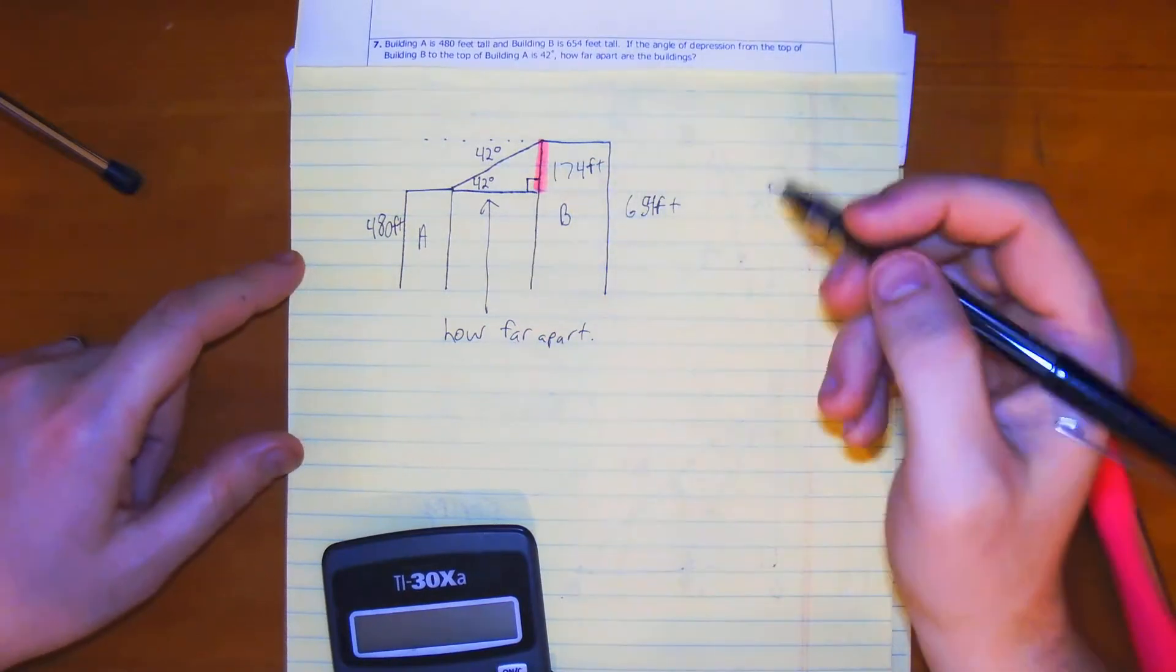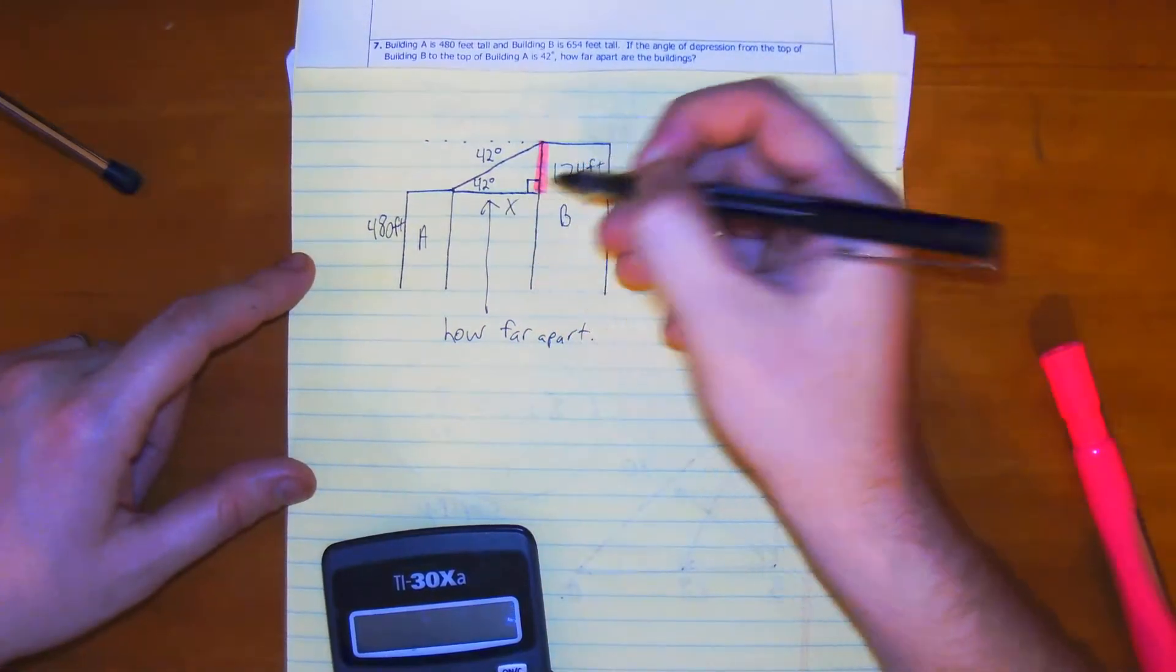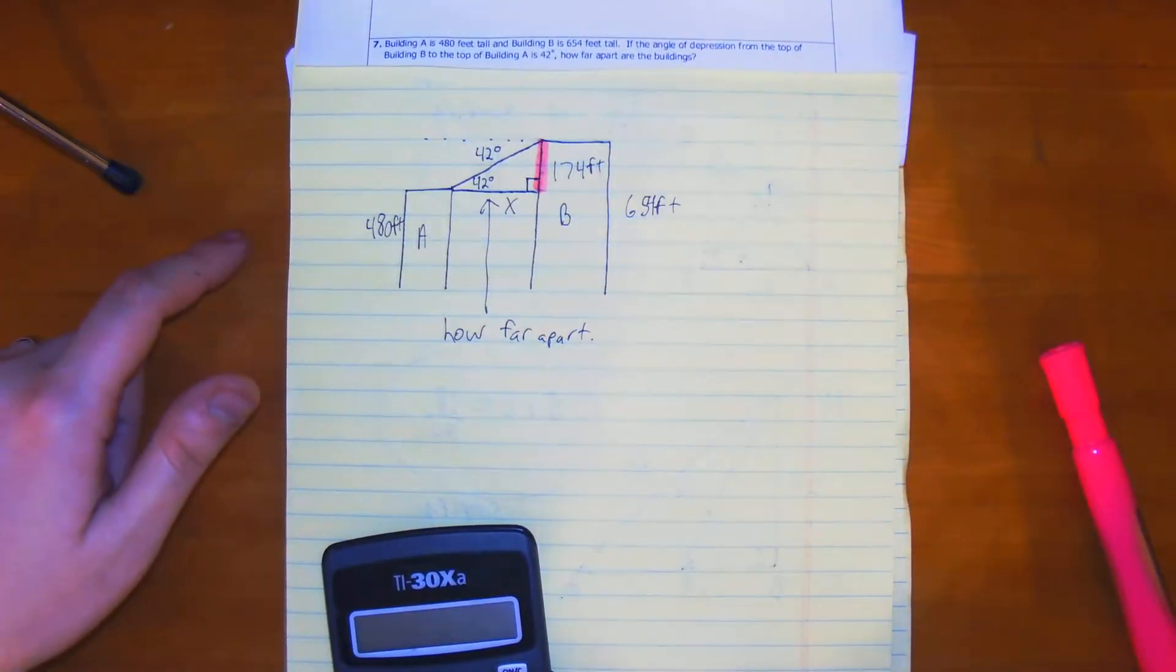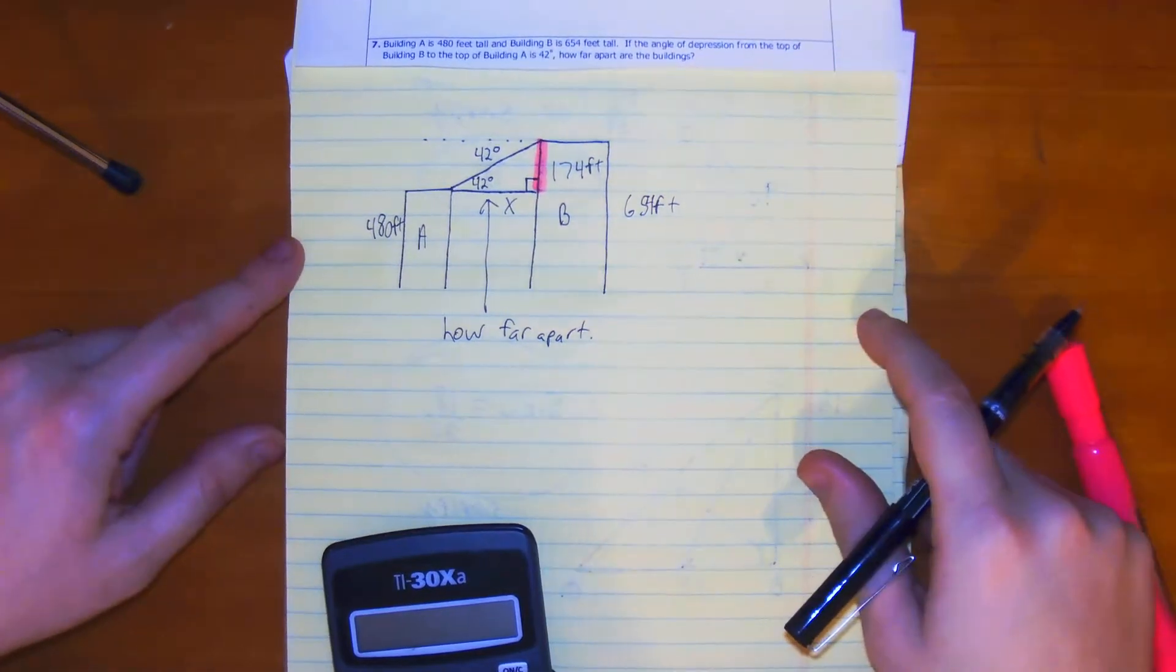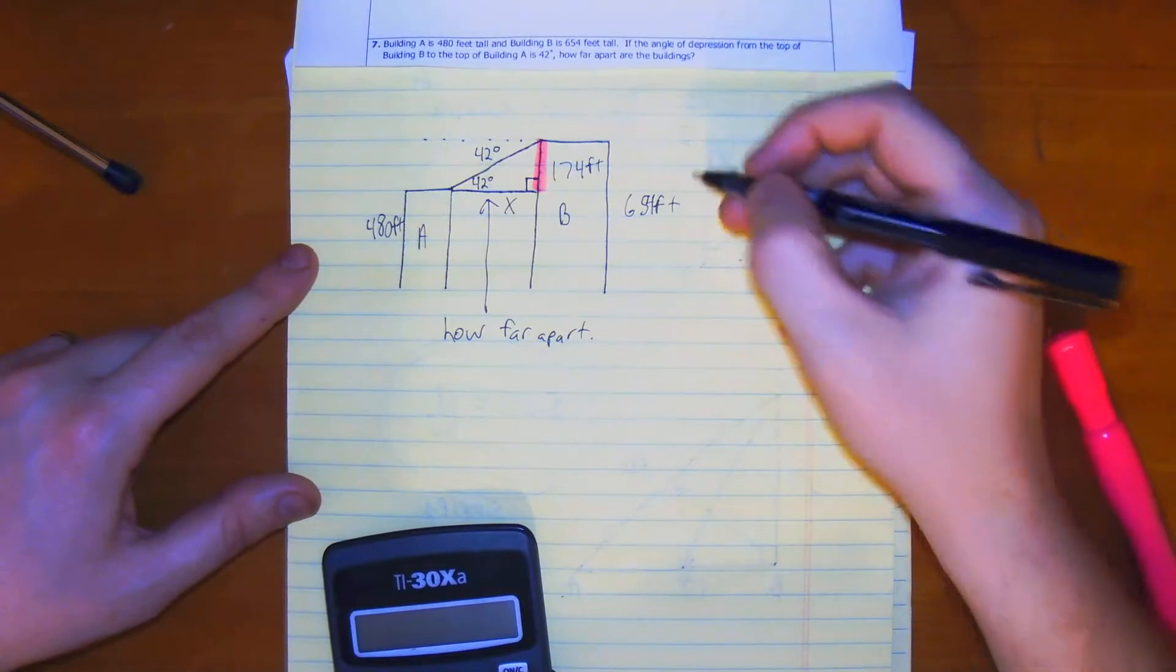We want to figure out how far apart they are, so we can call this x. We're not using the hypotenuse here, so we have to use the tangent function.